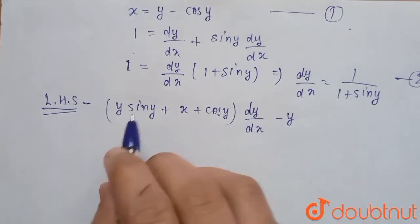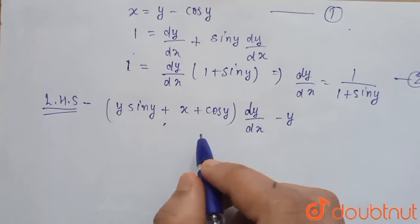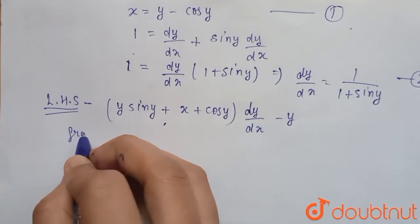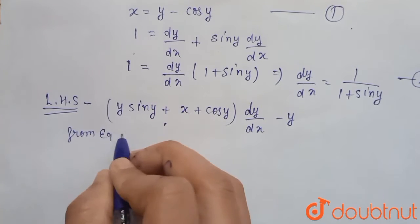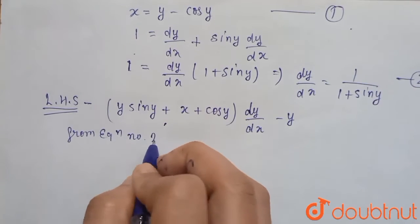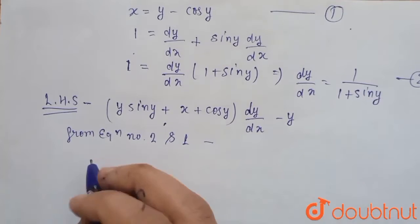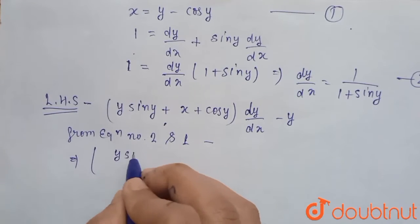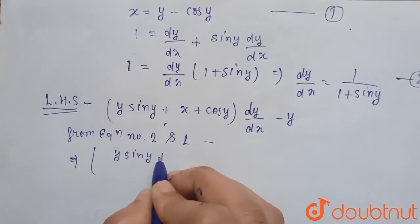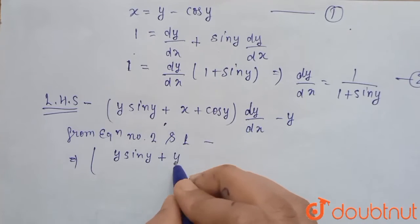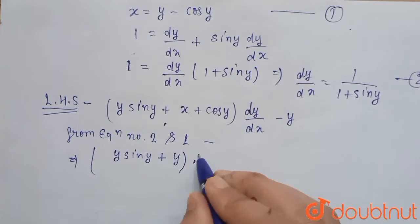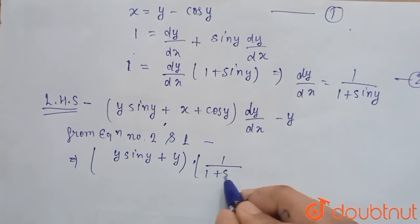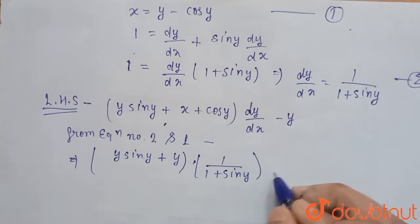So now, when we put value in this from equation number 2 and 1, here we get y sin y. This will become y into 1 upon 1 plus sin y minus y.